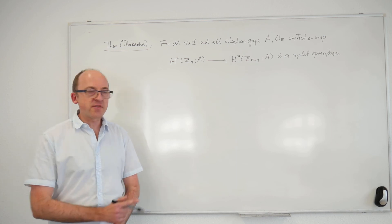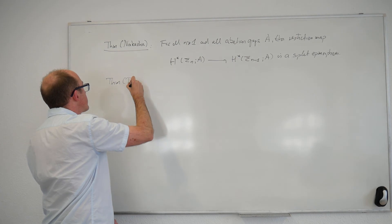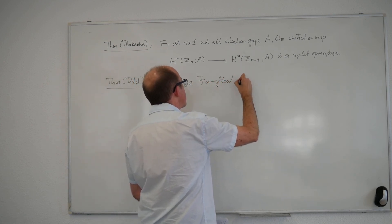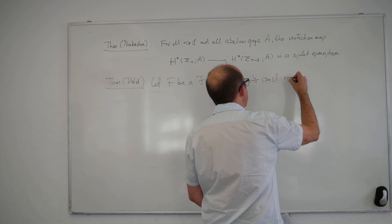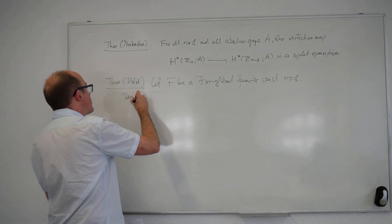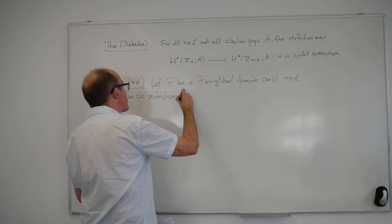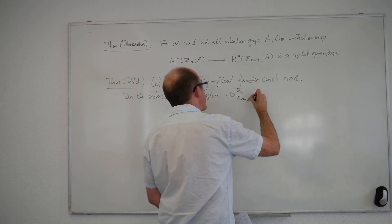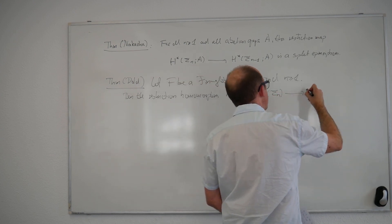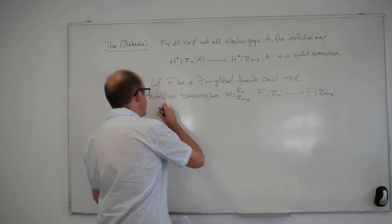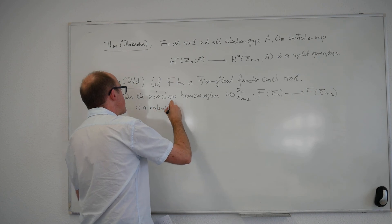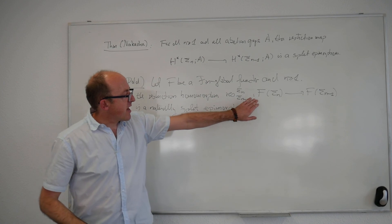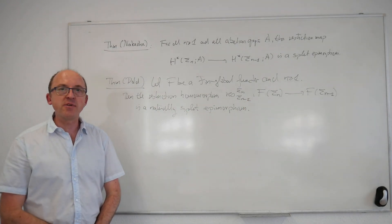As I explained in the lecture where I first introduced global functors, if you are only interested in finite groups then fin global functors can be described completely algebraically — for example, as biset functors where you have inflation, restriction, and transfers but not necessarily deflations. So Dold's paper essentially proves the following theorem: let F be a fin global functor and N ≥ 1. Then the restriction homomorphism from σ_N to σ_{N−1}, going from the value of the global functor at the N-th symmetric group to the value at the (N−1)-st symmetric group, is a naturally split epimorphism.